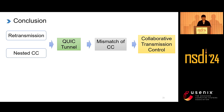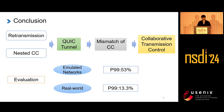To summarize, we tested the performance improvement brought by retransmission in QUIC tunnels. We also found that performance can be affected by the mismatch of transmission states caused by nested congestion control. To address this, we proposed Collaborative Transmission Control (TCC) to synchronize the control states. In emulated networks, a 53% performance improvement was achieved at the 99th percentile. In real-world network environments, a 13% improvement was achieved at the 99th percentile. Thank you.